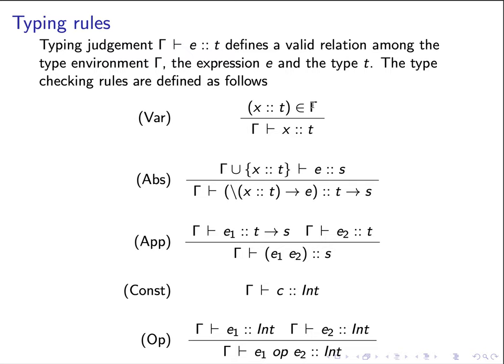The second rule is the abstraction rule, which says that the lambda abstraction, lambda x of type t arrow e, has a type t goes to s under the environment gamma if and only if we are able to prove that under the new type environment, gamma extended with mapping x to t, under which we are able to verify that the expression e has a type s.